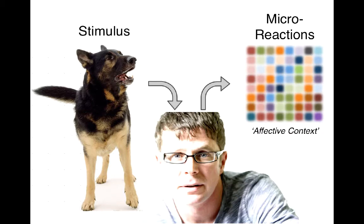As you become an adult, those reactions become micro-reactions — very sophisticated, very differentiated. But the key principle here is you do not remember the experiences that happened to you. What you remember is your reactions to experiences. And you use those reactions to conjure those experiences up, which is why our memory is so unreliable.